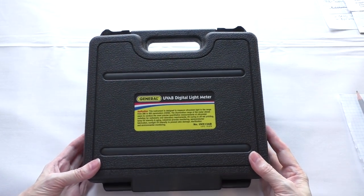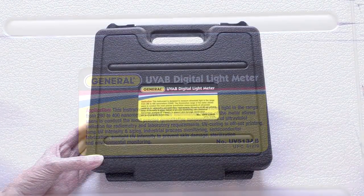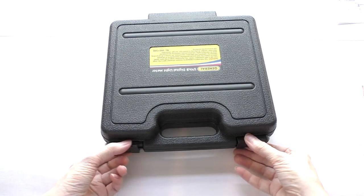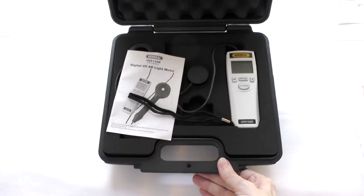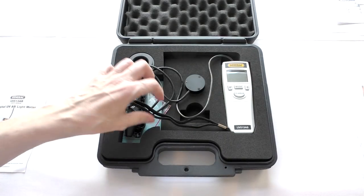Now to really test out this film, I've got a general UVAB digital light meter that I got. It's a very simple little piece of kit. It comes with handy instructions, as you'd imagine, but you don't really need it because it's just such a simple design.